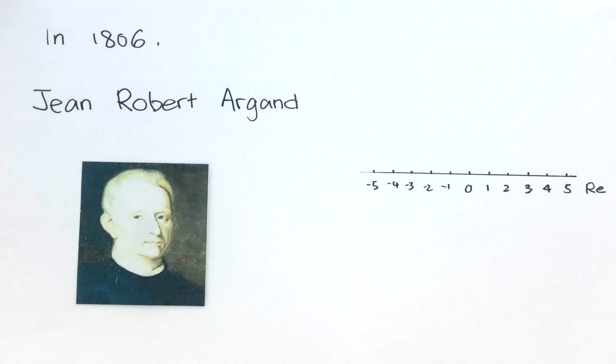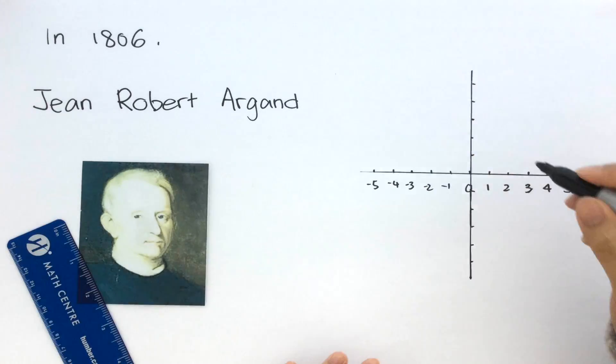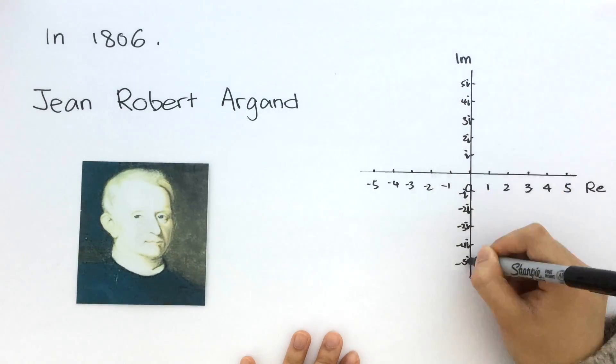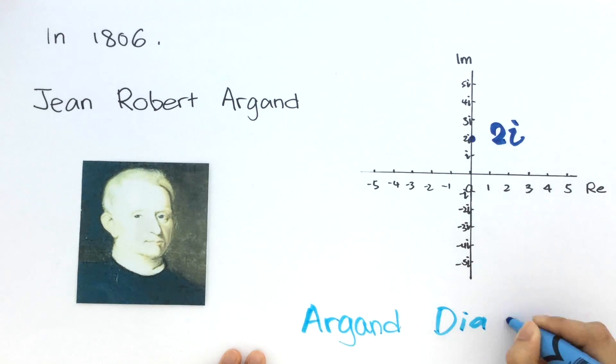In 1806, John Robert Argon helped to visualize imaginary numbers as a perpendicular axis to the real number line. For example, we can plot 2i on this plane. Today, the plane is called the Argon diagram.